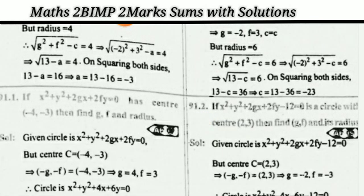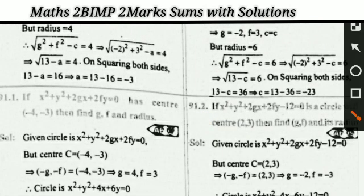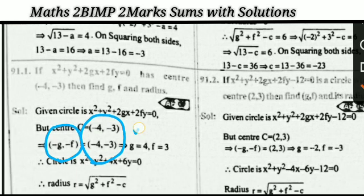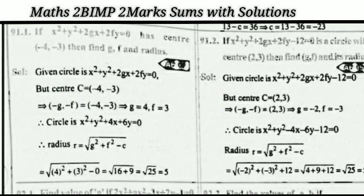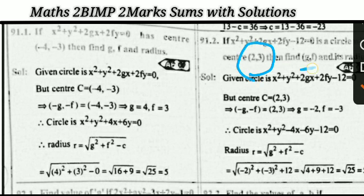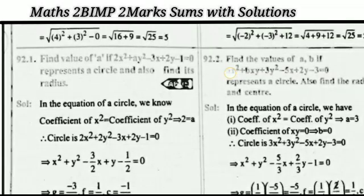Next problem: if the circle has center equal to (−4, −3), the center formula is (−g, −f). So given (−g, −f) = (−4, −3), therefore g = 4 and f = 3. Find the radius value as well. Similarly, if center equals (2, 3), find g, f, and radius using the same center formula (−g, −f) = (2, 3).